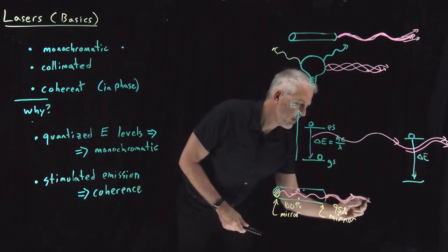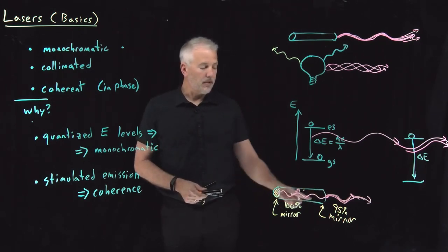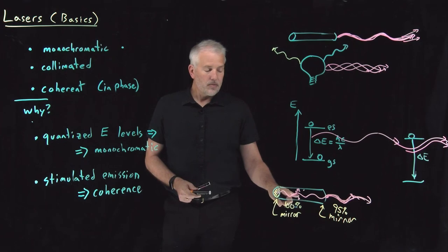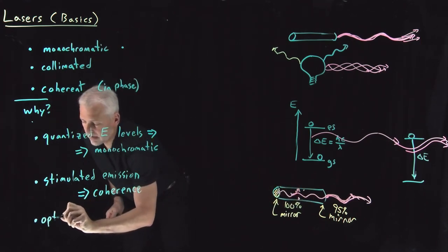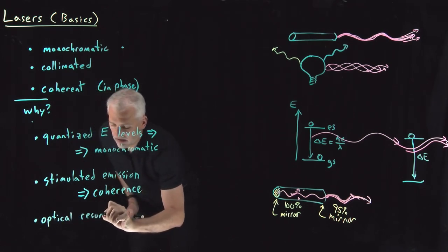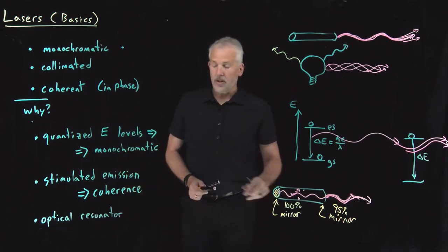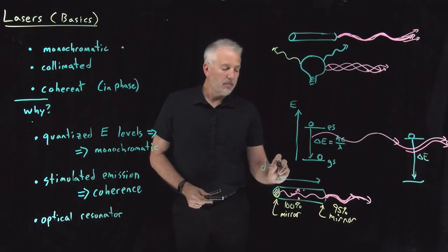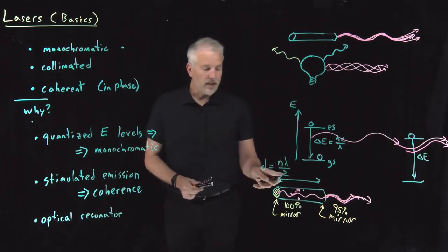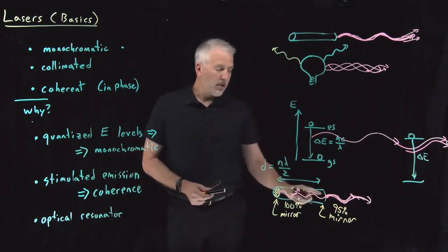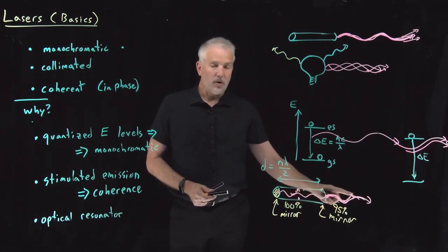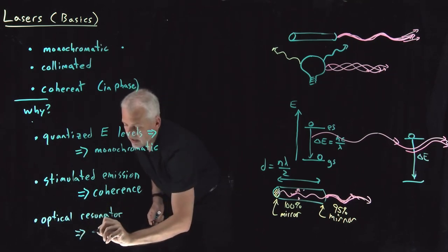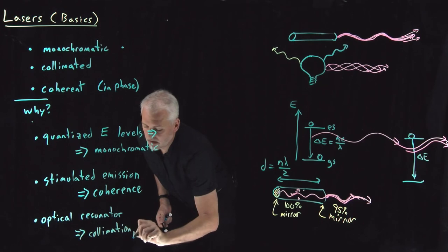This construction — the cavity in which the material resides — is called the optical cavity. When we put a mirror on both the front and back, we call it an optical resonator. If we make the length of the cavity equal to an integer or half-integer number of wavelengths of the light, that will also ensure the light coming out of the cavity is coherent. So by constructing an optical resonator with the right characteristics, we get not only a tightly collimated beam but also a coherent beam.